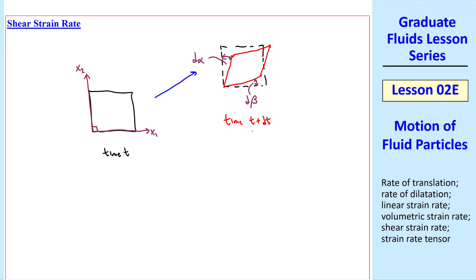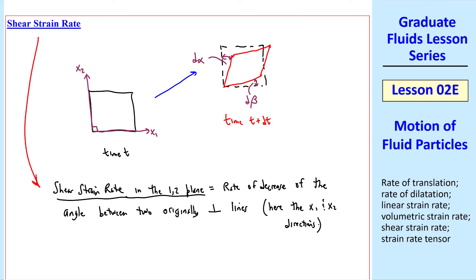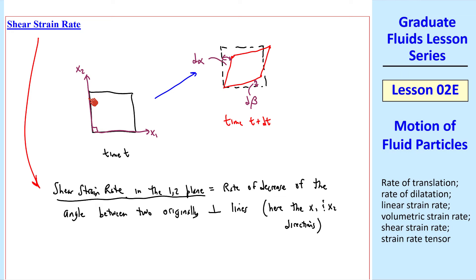We define shear strain rate here in the 1, 2 plane as the rate of decrease of the angle between two originally perpendicular lines. Here the x1 and the x2 directions. And we're considering these two line segments, which are initially perpendicular, but as it moved and distorted, that angle is no longer 90 degrees.